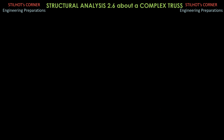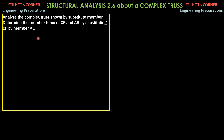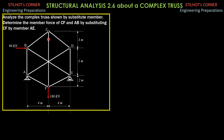Hello, future engineers, my subscribers, and my viewers. Here is another problem on complex truss solved by the substitute member method. This problem is similar to problem 2.5, but I'll solve it again using another method — by substitute member — to verify the answers in problem 2.5. Analyze the complex truss shown by substitute member. Determine the member forces of CF and AB by substituting CF with member AE. I also plan to solve this again using another substitute member, but CF will be substituted by member DF to make it more challenging. We expect the same answers, of course.